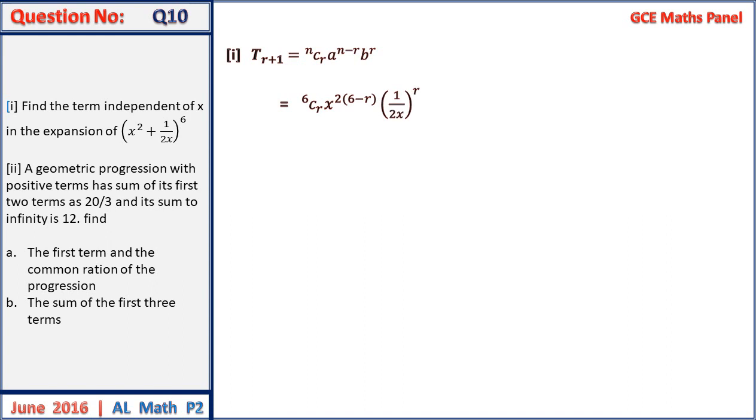When we simplify these values we have 6 combination r, x to the power 2 times 6 minus r, times 2x to the power minus r. Bringing the terms to further simplification, we have 6 combination r times 2 to the power minus r times x to the power 12 minus 2r minus r.